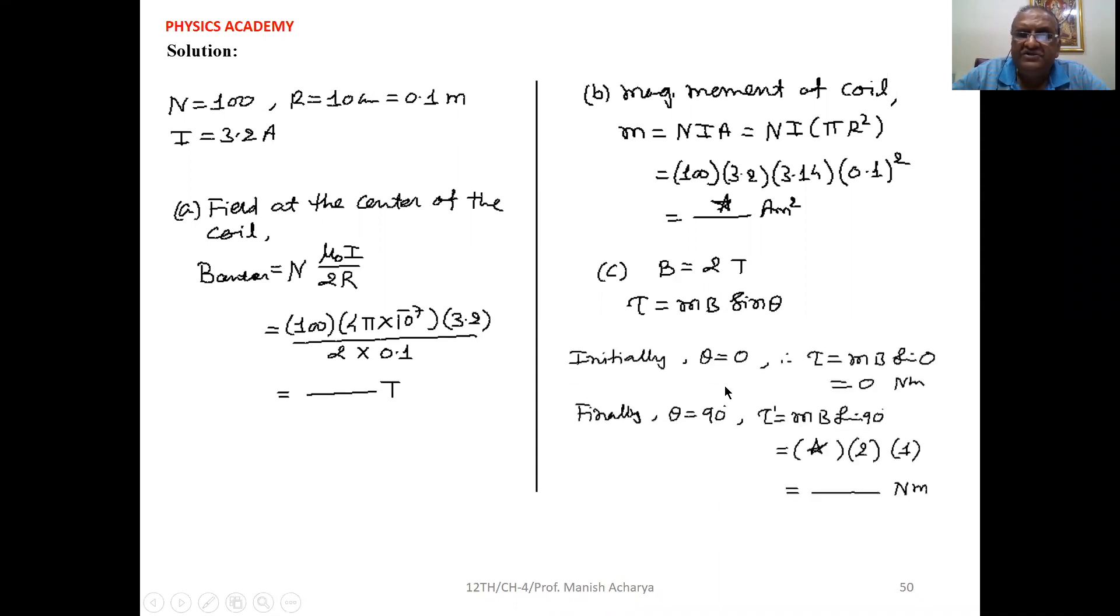Initially θ is 0, so we can say initially the torque is τ = MB sin θ = sin 0, so 0.